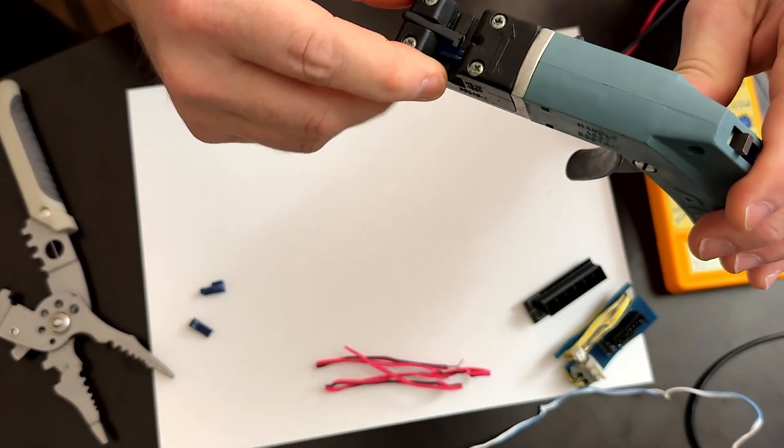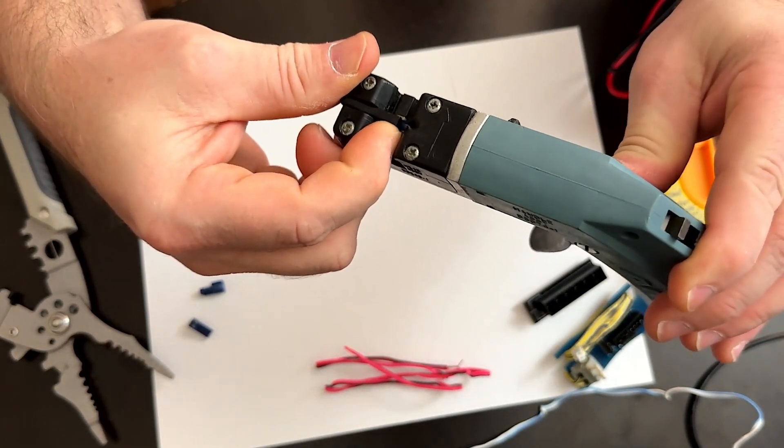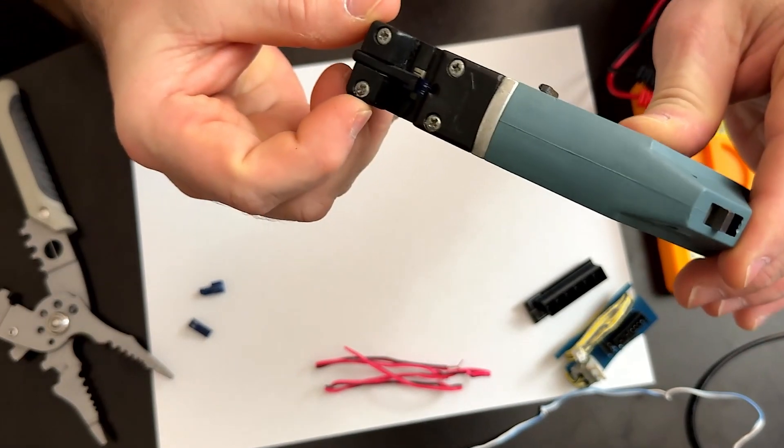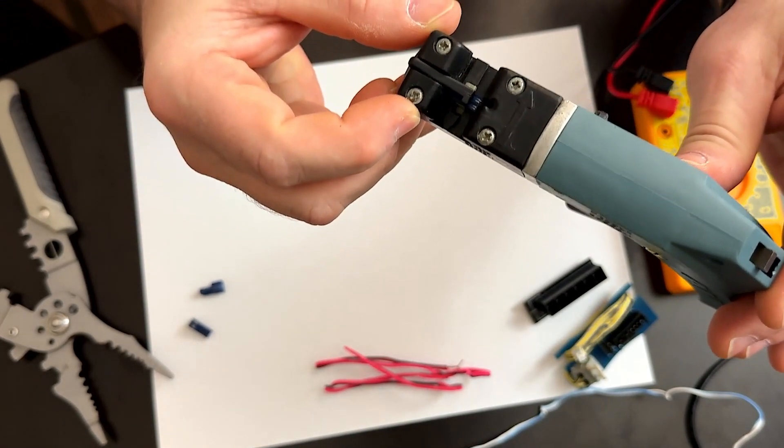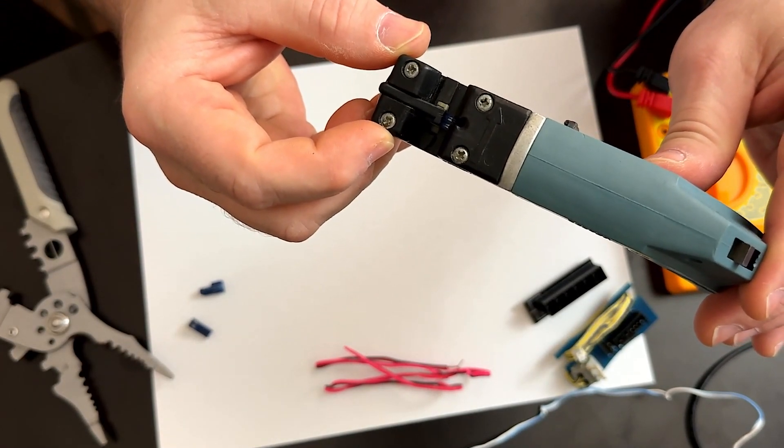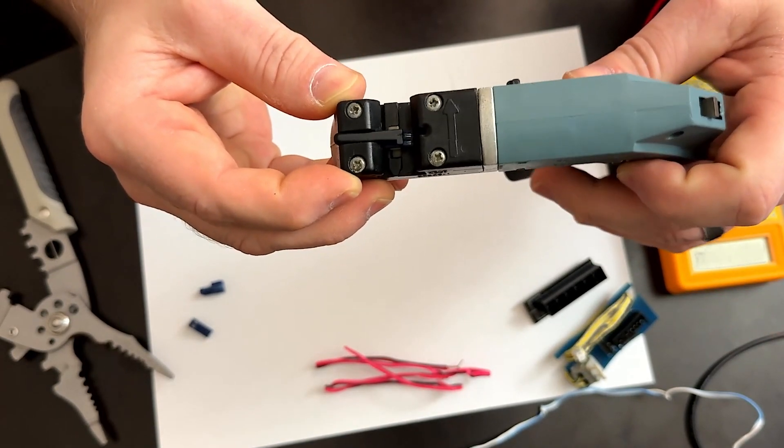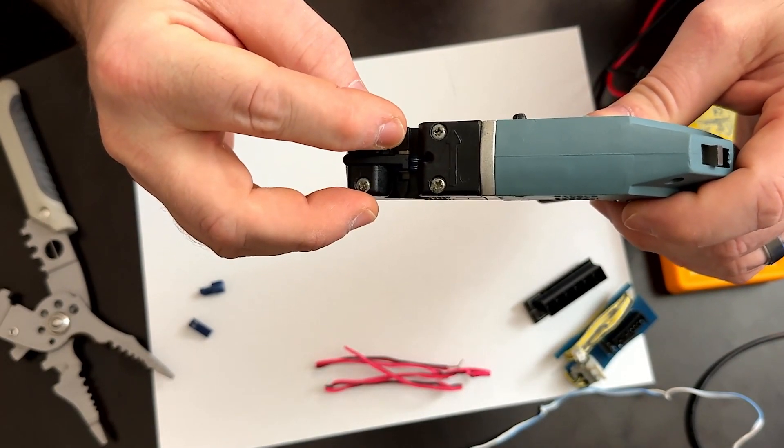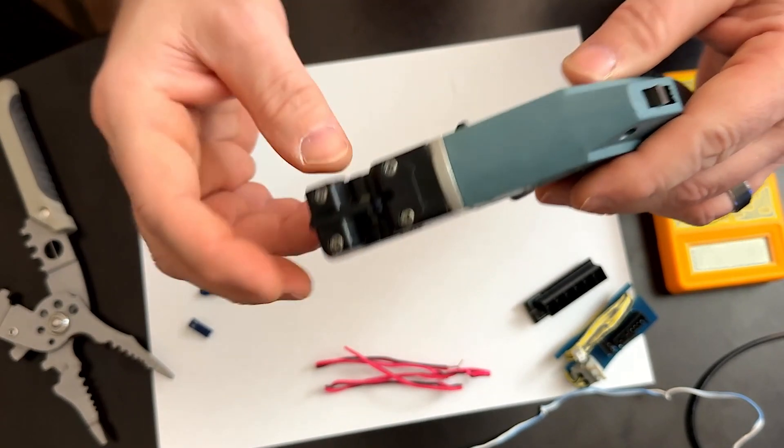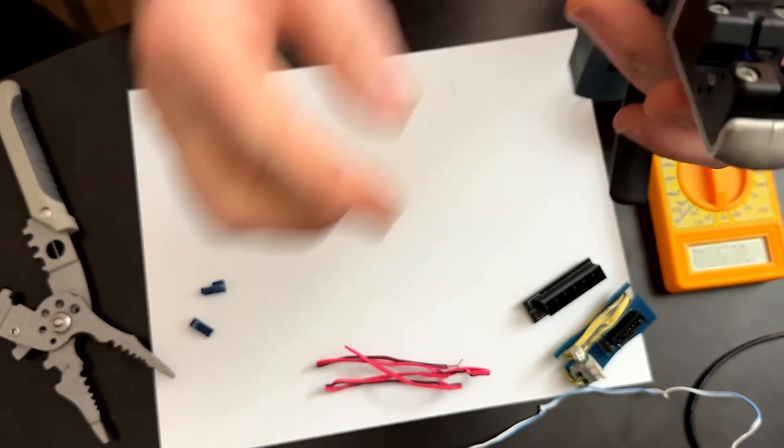And then what you want to do is push until you hear a little click. So you can see if I can get the light in there, that it's lined up with one side. So once I crimp it, it'll move over one notch and line up with the other side and then you do it again. So let's go ahead and do it.